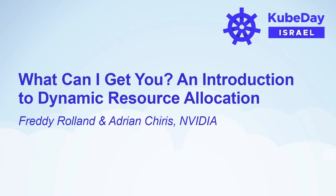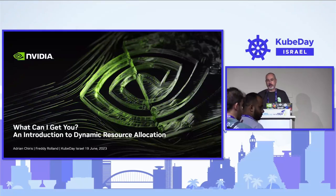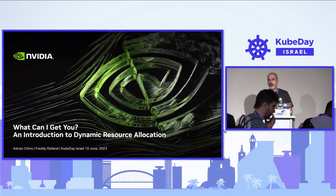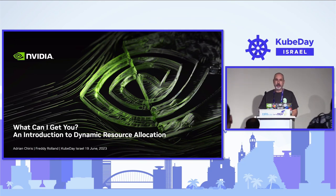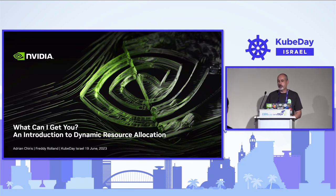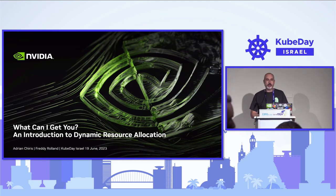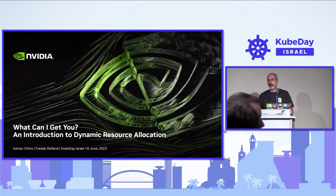I'm Freddy Roland and with me is Adrian Kiris. We are software engineers at NVIDIA, part of the Cloud Orchestration Team in the Networking Business Unit. Our day-to-day work is to enable networking technologies in Kubernetes. Today we'll talk about dynamic resource allocation, also known as DRA. DRA is a new API for requesting resources in Kubernetes.